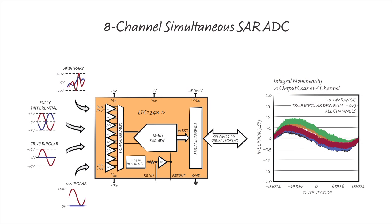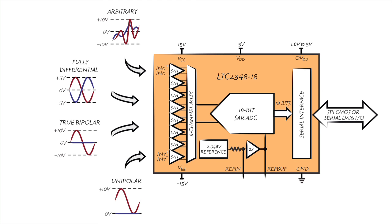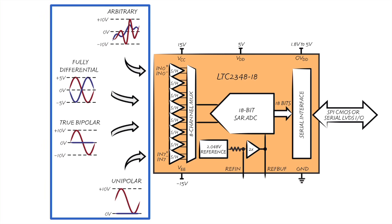The LTC 2348-18 can simultaneously digitize eight channels of differential high voltage signals. Here, the word differential means that each channel measures the voltage difference between a positive and a negative input pin. Four channels of differential signals are shown, with the positive pin signal shown in red and negative pin signals shown in blue. The LTC 2348-18 accepts all standard high voltage signal swing formats.